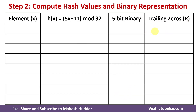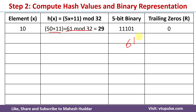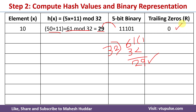To compute the trailing zeros, consider the first element 10. Applying the hash function: 10 × 5 = 50; 50 + 11 = 61; 61 mod 32 = 29. The binary representation of 29 is 11101. There are no trailing zeros, so the number of trailing zeros is 0.